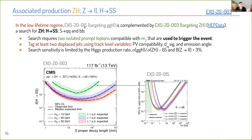In the low-lifetime regime, this search is complemented by another analysis — a search for pairs of long-lived dark photons in association with a Z boson. The Z is used to trigger the event by requiring two isolated prompt leptons compatible with the Z mass, providing a very clean environment to tag at least two displaced jets using track-level variables. The previous search had sensitivity around the meter lifetime, and now we go to the millimeter scale — a completely different scale, showing good complementarity in lifetime.